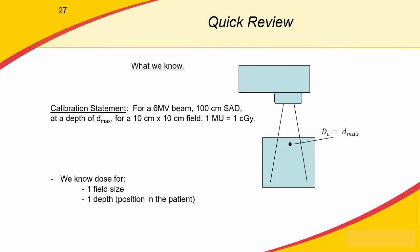Just a quick review of what we learned in part one. When we calibrate our LINAC, we start with a calibration statement that reads something like: for a 6 MV beam at 100 centimeters SAD, at a calibration depth of D max, for a 10 by 10 cm field, we have set the output such that one monitor unit equals one centigray of dose at D max.